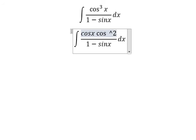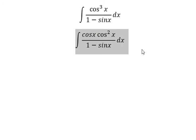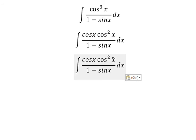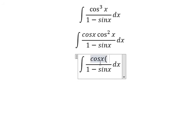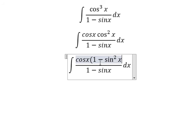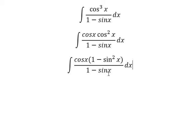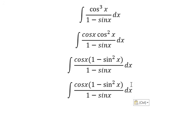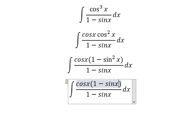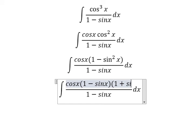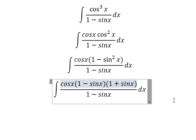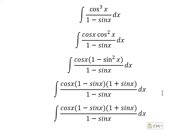We substitute cos²x with 1 minus sin²x. Then we can factor this as (1 minus sinx) multiplied by (1 plus sinx). We simplify by canceling the 1 minus sinx terms.